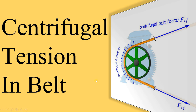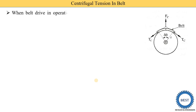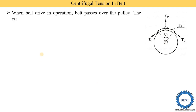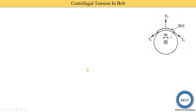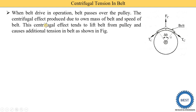Now we understand in detail what is centrifugal tension in a belt. When a belt drive is in operation, the belt passes over the pulley. When we start the belt drive using an electric motor, the pulley rotates and the belt passes over it. The centrifugal effect is produced due to the own mass of the belt and the speed of the belt.